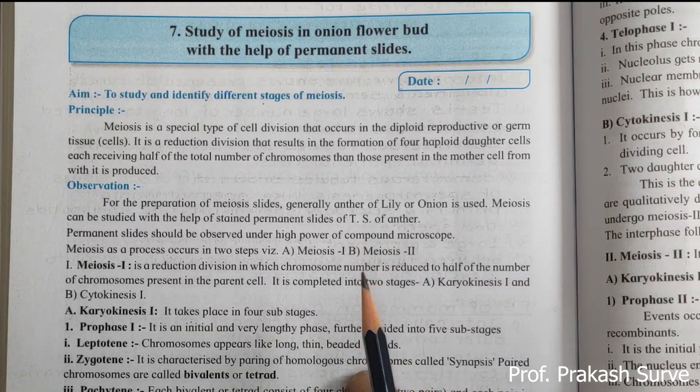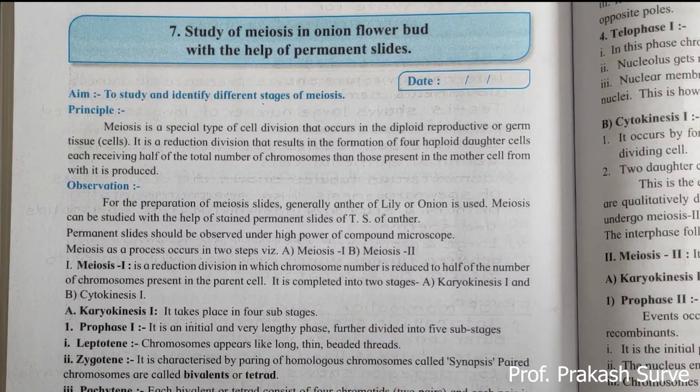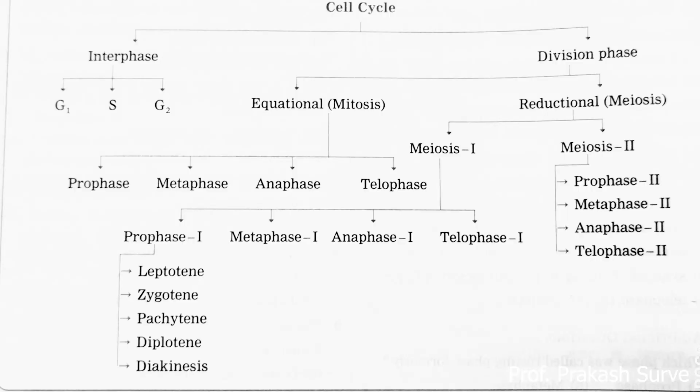This question is there for question number four for the identification. Now first we will see about the main difference between mitosis and meiosis, which you learned in the eleventh standard. Mitosis is an equational division where the chromosome number remains the same, while meiosis is a reduction division where the chromosome number is reduced to half. Mitosis takes place in the body cell while meiosis takes place in the reproductive cell or in the germ cells.